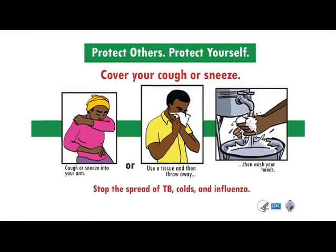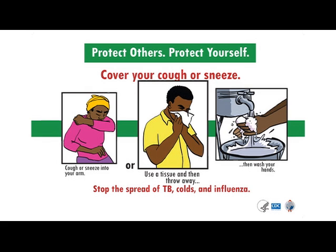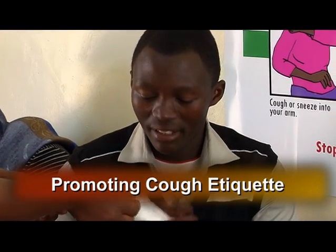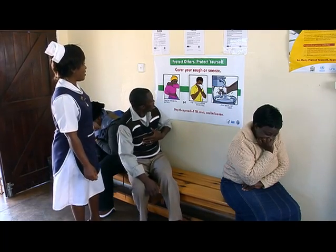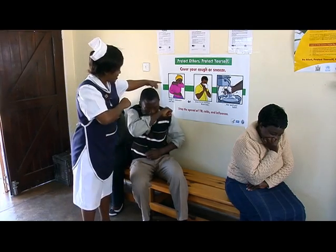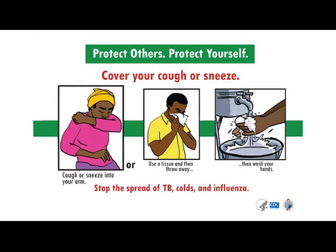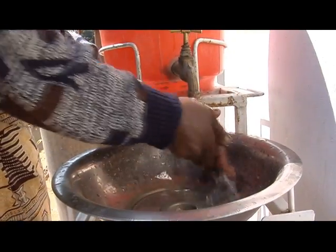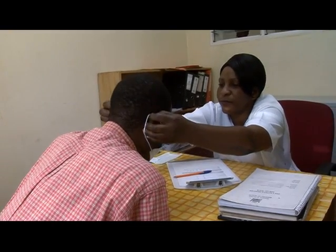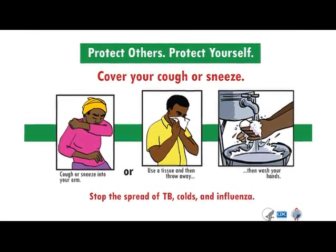Cough etiquette refers to the practice of covering all coughs and sneezes to contain respiratory secretions. All patients, visitors, and clinic staff should be encouraged to cover their coughs and sneezes with a handkerchief or tissue. When a handkerchief or tissue is not available, coughing or sneezing into the upper arm or elbow is the preferred technique for preventing the spread of infection. This may seem strange, but infection control experts recommend this technique as safer than coughing or sneezing into the hands. Those who cough or sneeze into their hands should wash them with soap and water or use an alcohol-based hand rub. If disposable surgical masks are available, have coughing or sneezing patients wear them to contain respiratory secretions. Ask patients to dispose of masks in the waste bin after use.